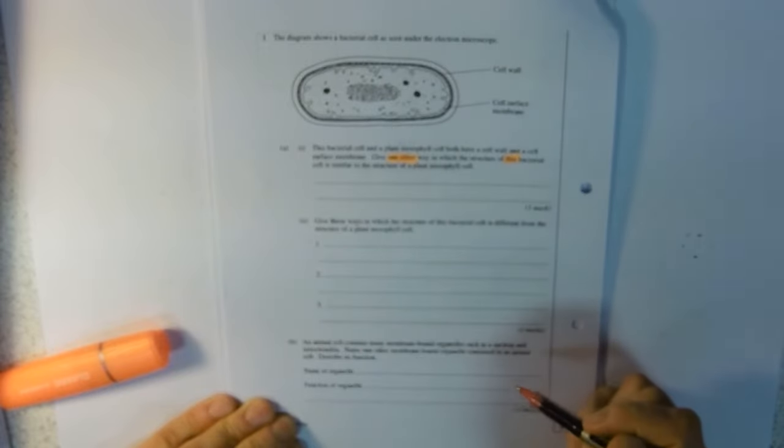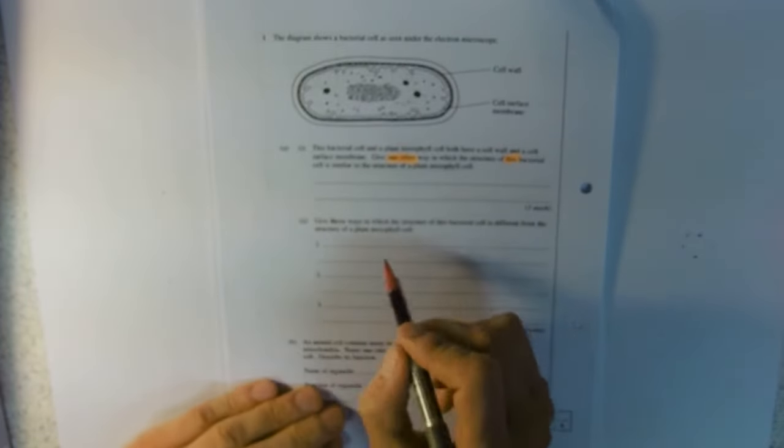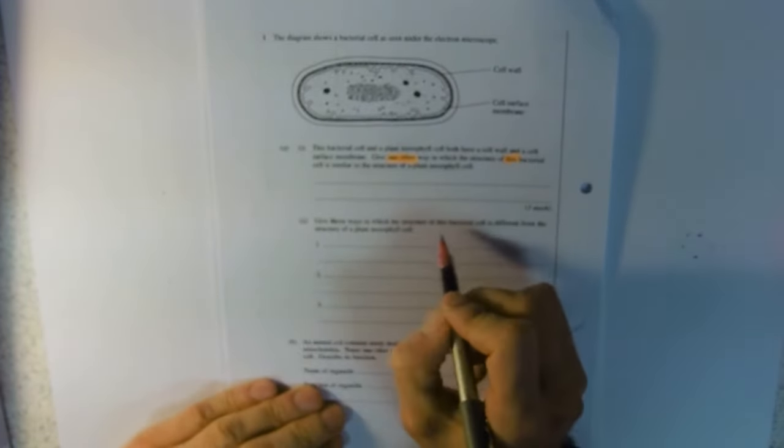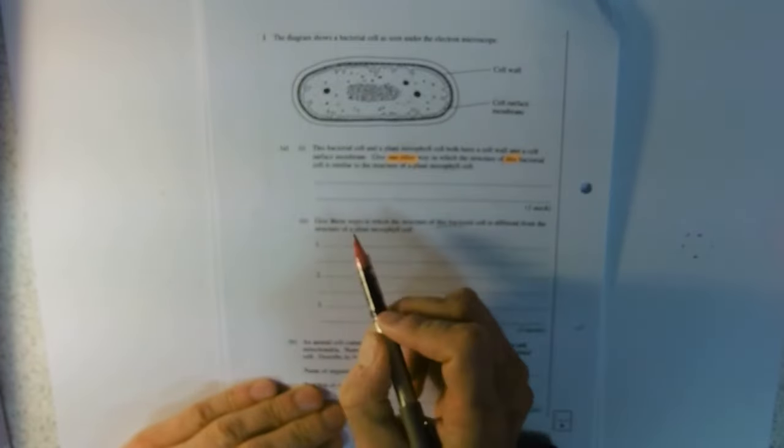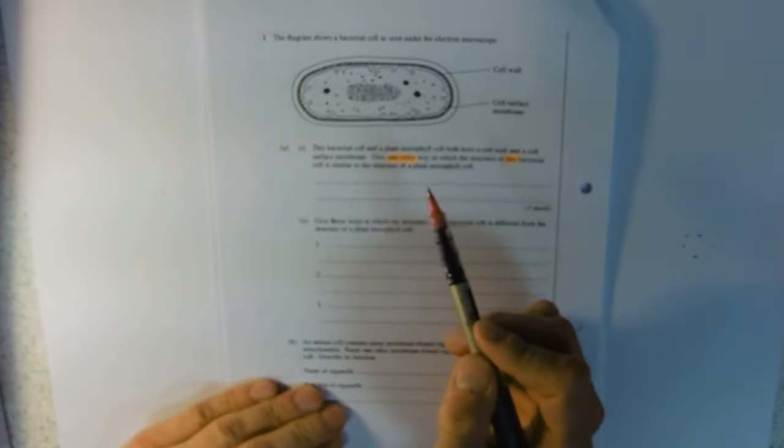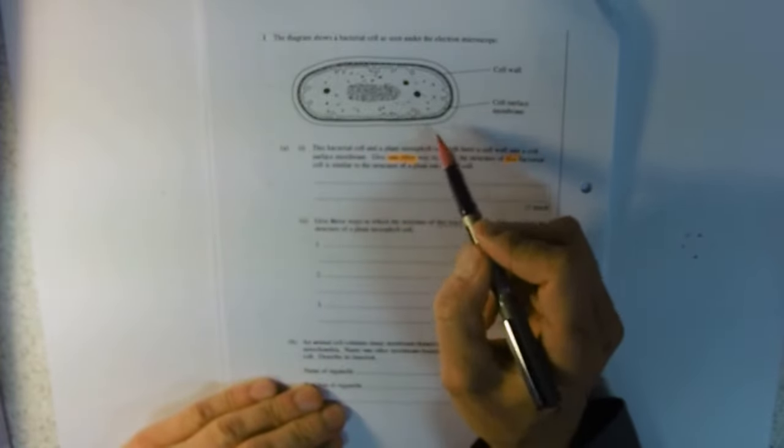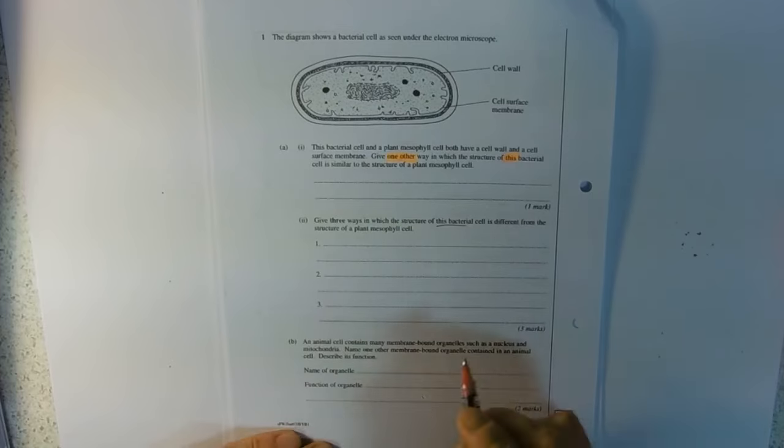The second part is differences. We're looking for ways that this bacterial cell is different to the plant cell. It really wants you to talk about this cell and how it's different, so for example something that is present here but not in a plant, or something that is missing here where a plant would have it.